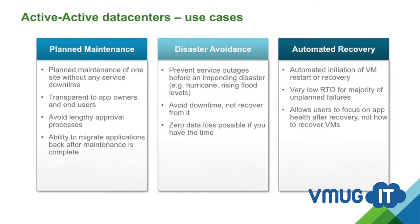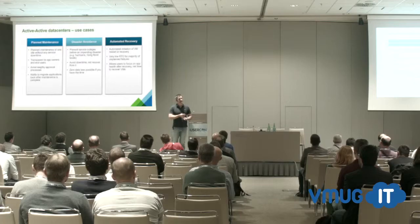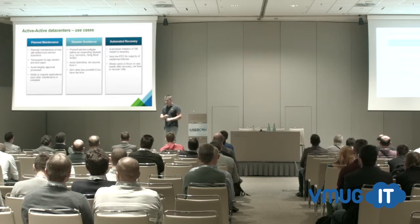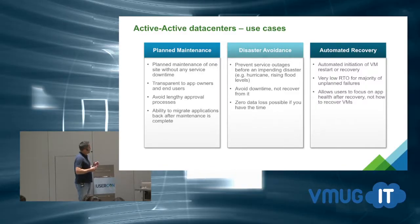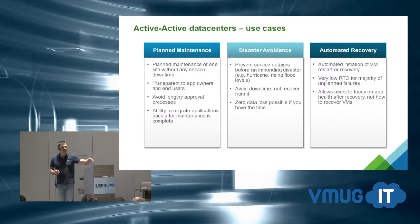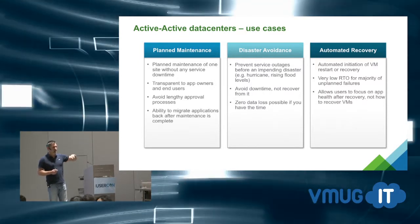When we look at active-active use cases, the typical scenarios are where sites are close together and you can stretch your networks. With an active-active design you potentially have a design where you can vMotion between sites, which means you need some kind of Layer 2 equivalency at the other site. The advantage is that a site failure is a very fast restart, because storage is already active at the other site.